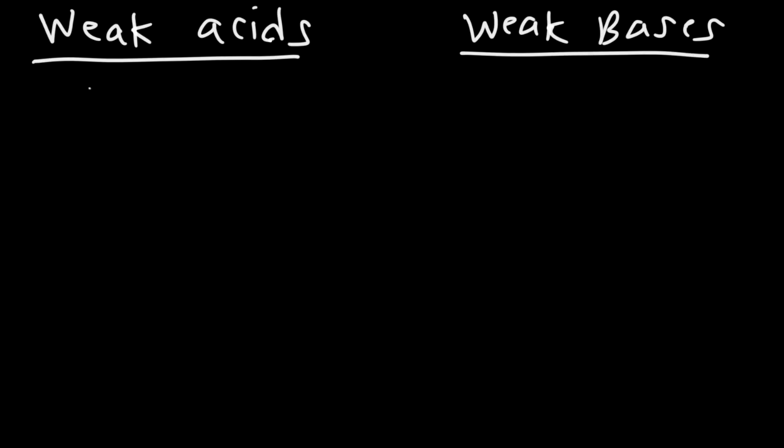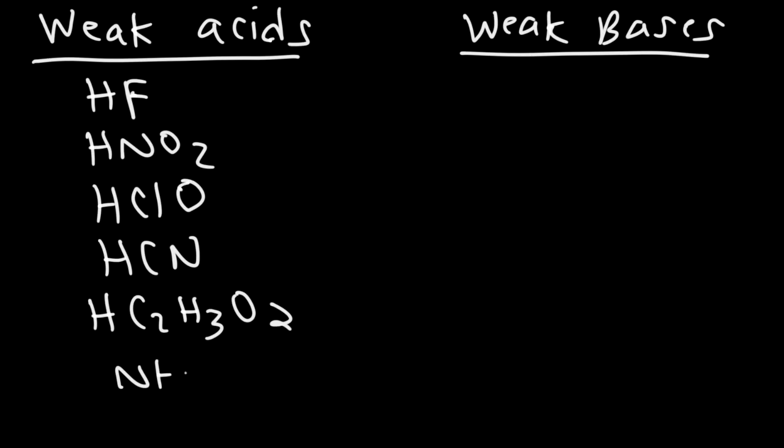Now, there are some other weak acids and weak bases that you should know. Let's go over some common ones. HF is a weak acid. We talked about that one already. Another one is nitrous acid. And then you have hypochlorous acid. There's HCN, hydrocyanic acid, acetic acid, and also the ammonium ion. That's another weak acid. So these are just a few. There's more, but I want to show you the relationship between weak acids and weak bases.